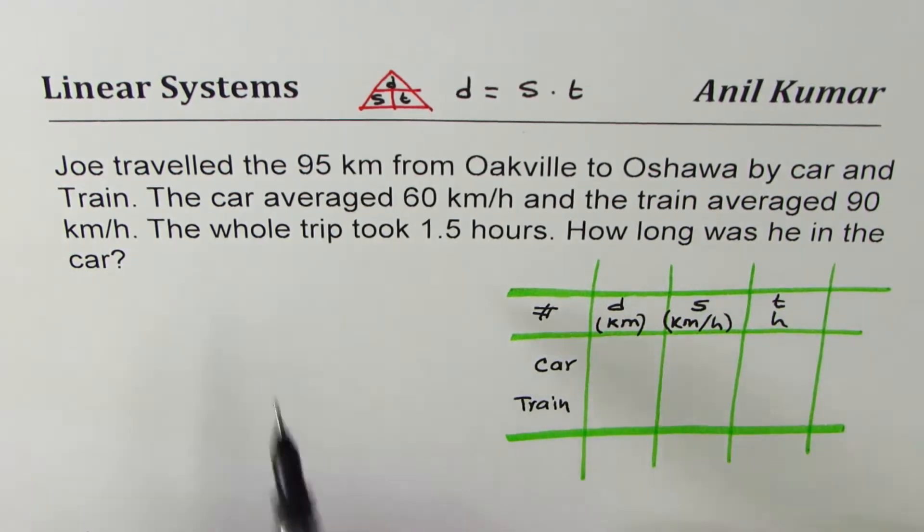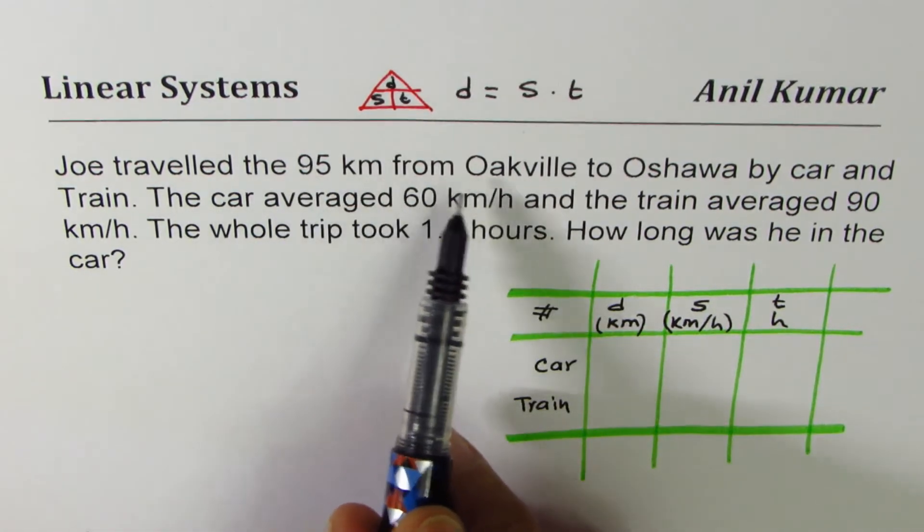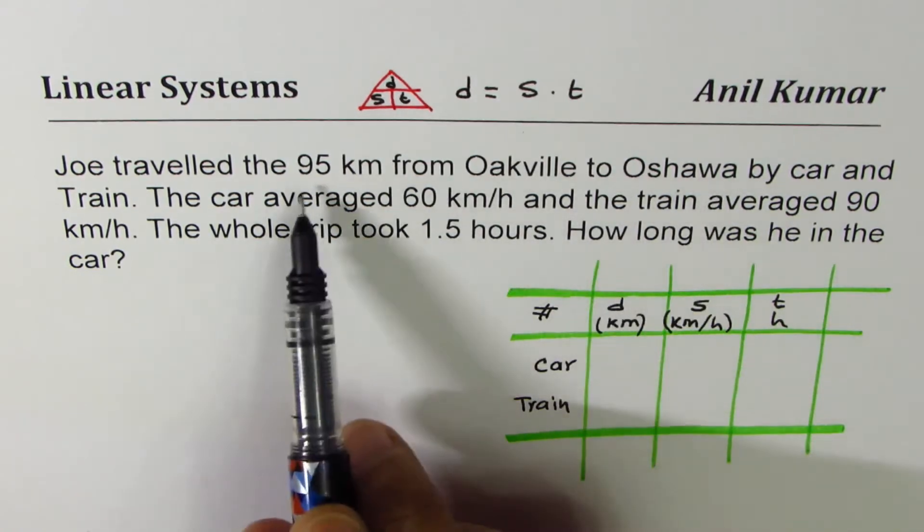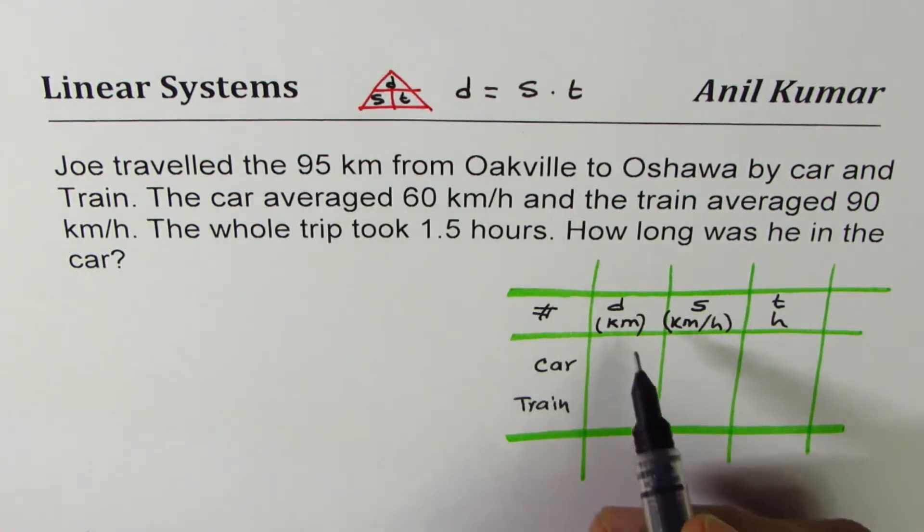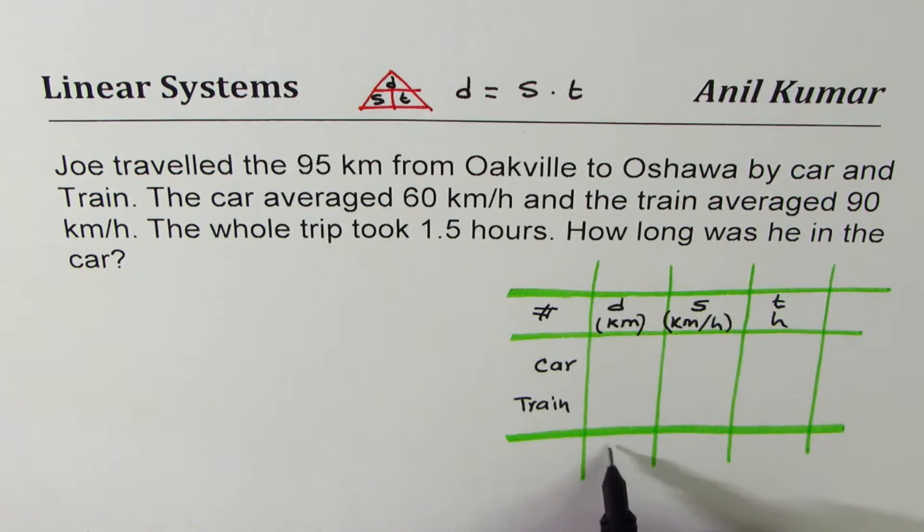Now the information given to us is he traveled 95 kilometers from one place to the other. Total distance is 95. So in the distance, total distance 95 we can write here. This is total.